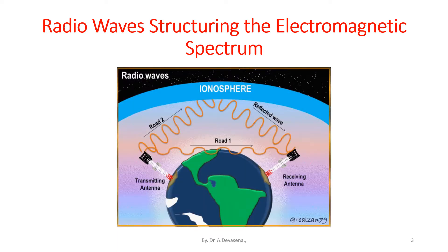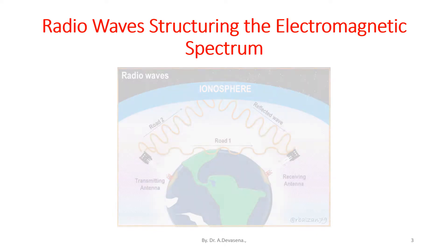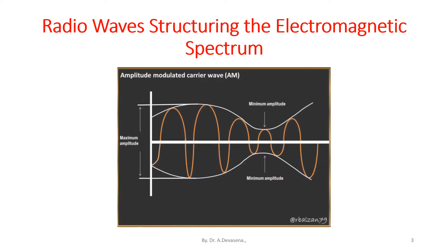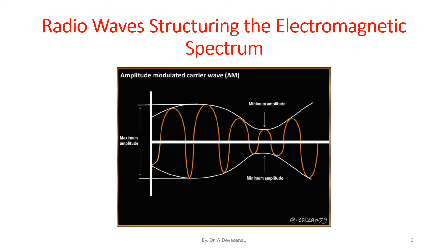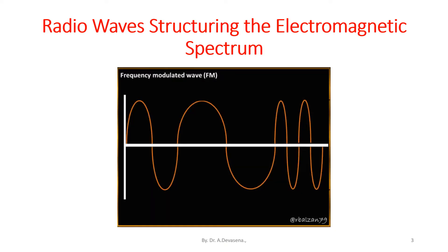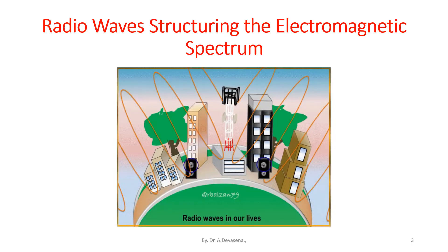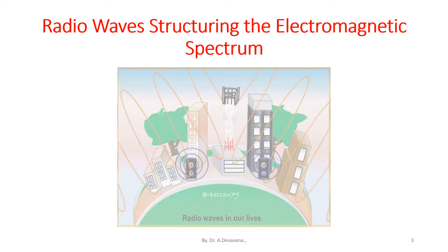How the radio waves are generated, how they are transmitted and received, representation of the carrier wave — here we are seeing the amplitude modulated wave and the frequency modulated wave.